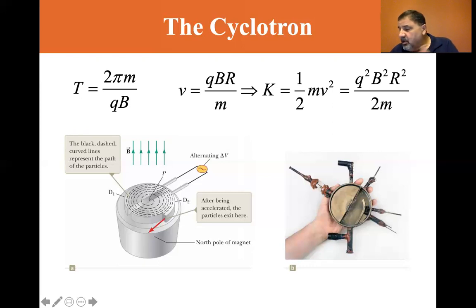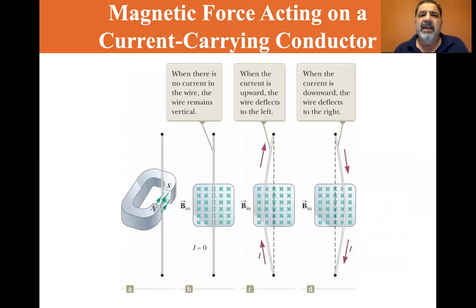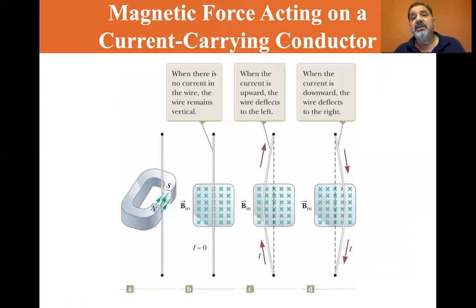It says hospitals use cyclotron facilities to produce radioactive substances for diagnosis and treatment. Okay. And I think that's it for this section. Yeah, we're going to, that ends this section. Next, we're going to go to magnetic force on a current carrying conductor. Okay.